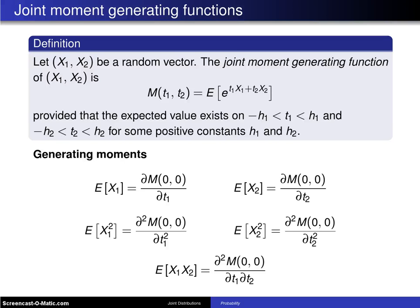We defined moment generating functions for a single random variable x way back in chapter 3. So now that we have two or more random variables, there is something known as a joint moment generating function.